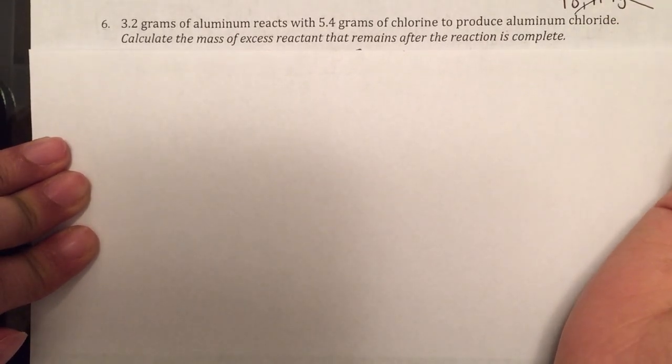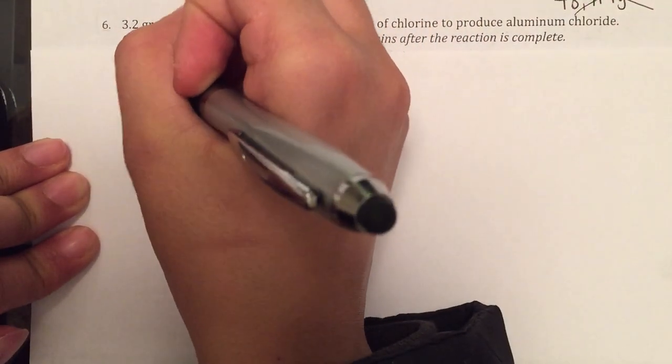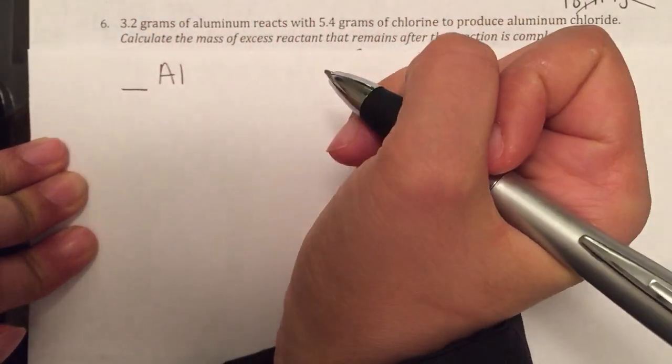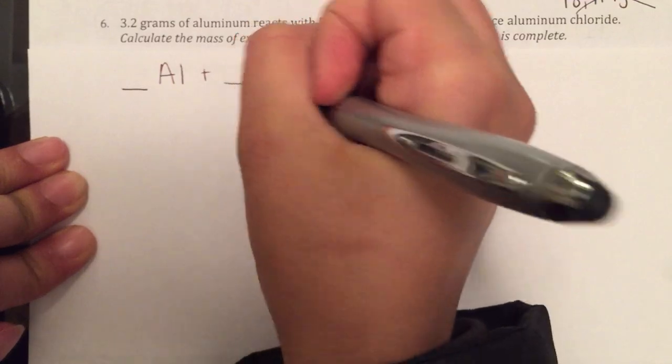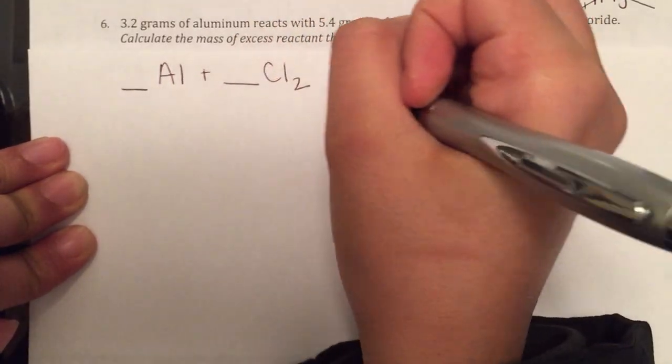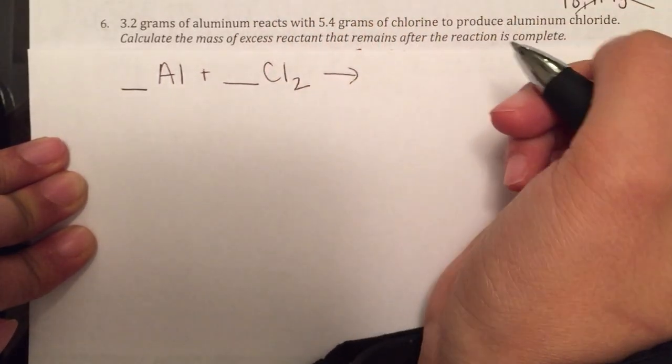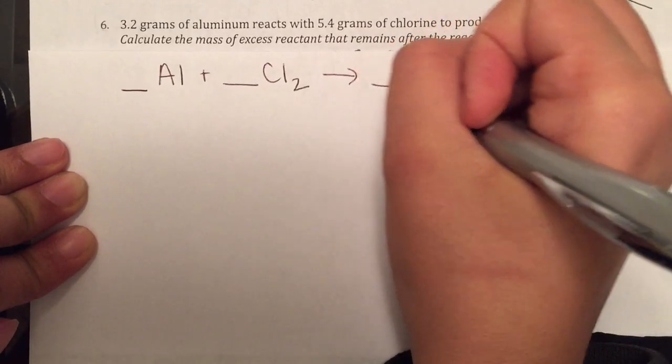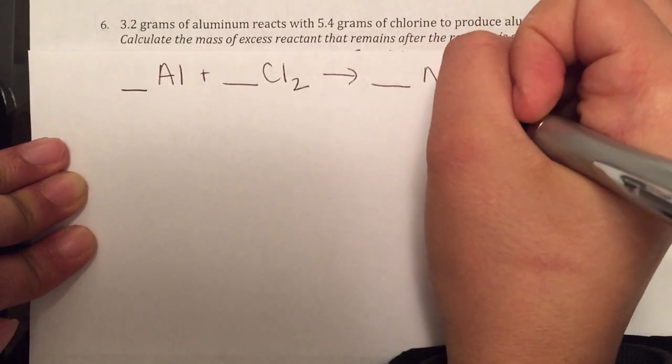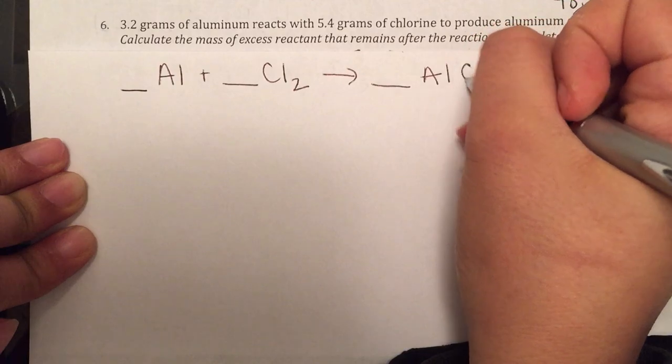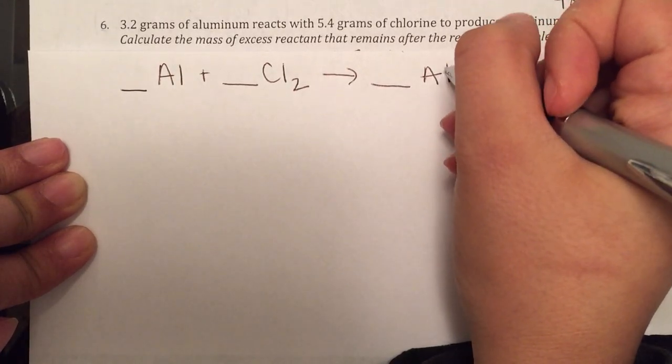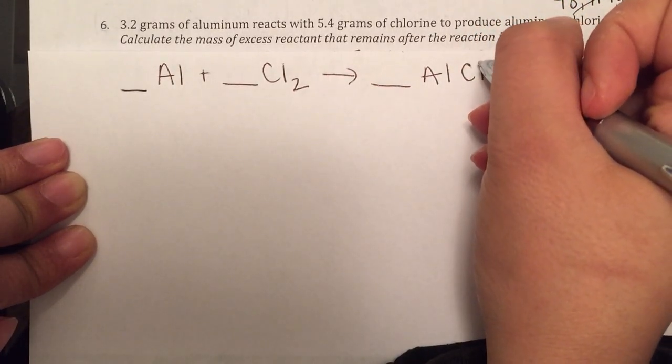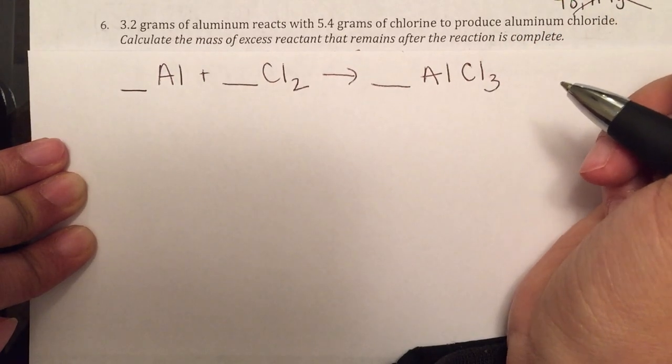So first, as always, let's write the reaction. We have aluminum reacting with chlorine. It's a diatom, so it's Cl2, and they're producing aluminum chloride. So we're looking at a synthesis reaction, aluminum and chlorine. If they swap charges, aluminum has a plus 3, chlorine has a minus 1, so AlCl3.